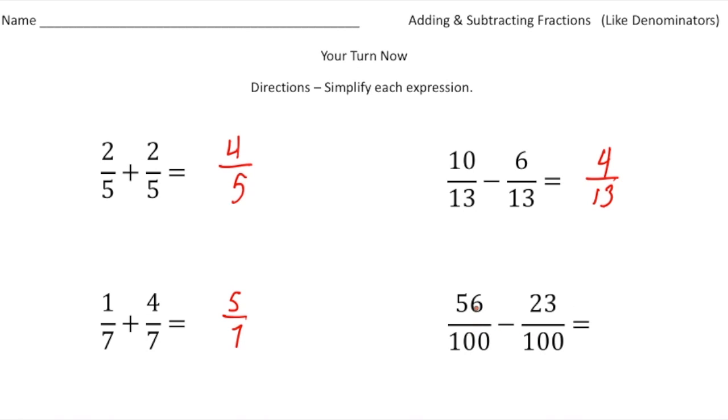Finally, 56 one hundredths take away 23 one hundredths. We need to take away 23 from 56, and that's going to be 33 one hundredths. 33 one hundredths is reduced, so that's our final answer. How'd you do? We'll see you next time!